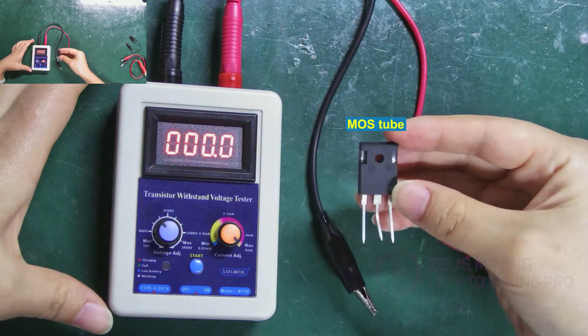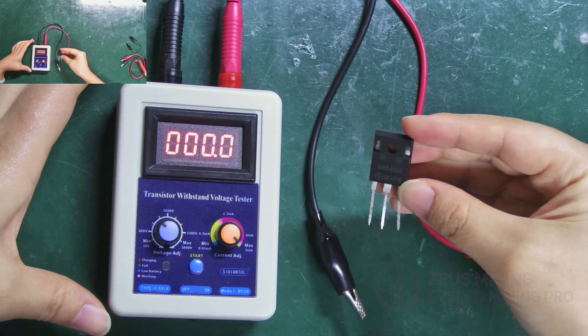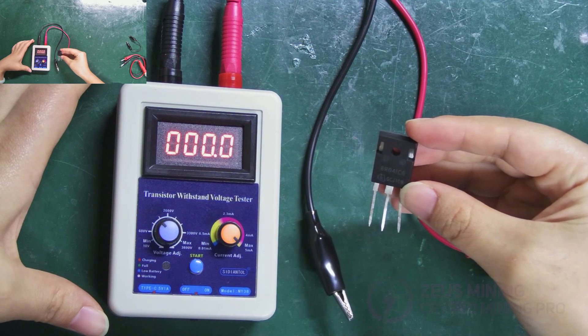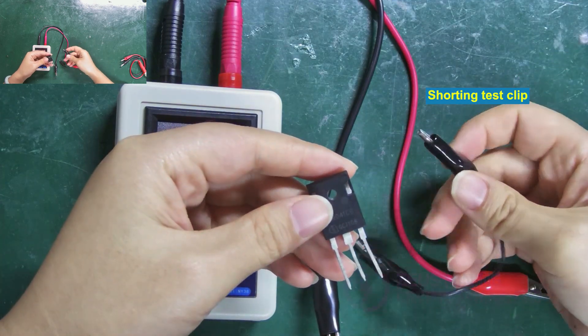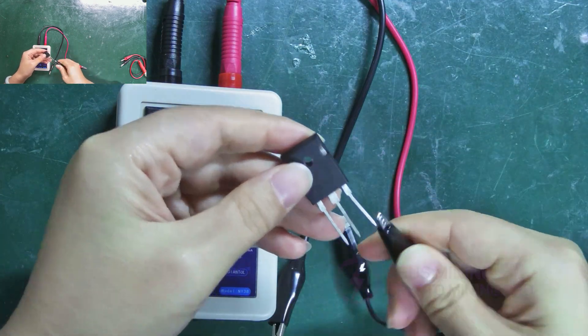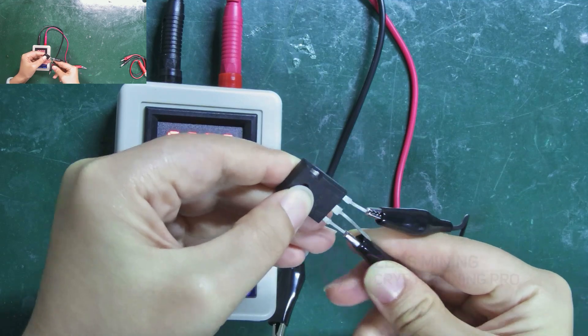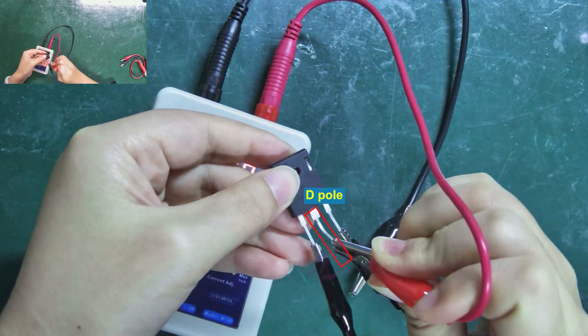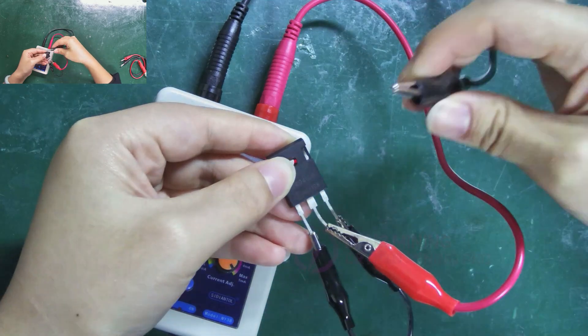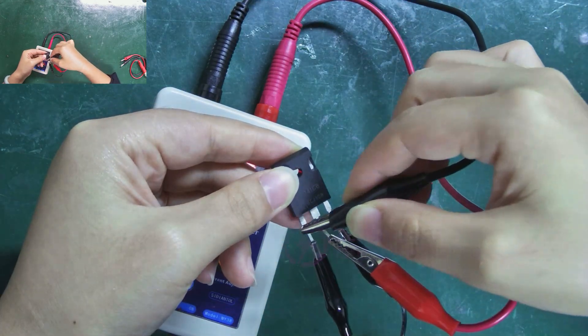Let's switch to the MOS tube. If we don't know its parameters, what should we do? To measure a MOS tube, we need to use the shorting test clip. Short the G and S poles like this. Then connect the red clip to the D pole of the MOS tube, and the black clip to either the G or S pole.